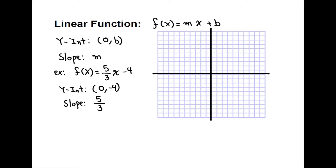Our next example is about a linear function. A linear function is pretty much like slope-intercept form: f of x equals mx plus b, where slope is m and the y-intercept is the ordered pair (0, b). In the example on the screen, the y-intercept is (0, -4) and the slope is 5 over 3. The numerator tells us how many units to rise, and the denominator tells us how many units to run.